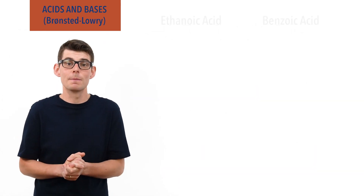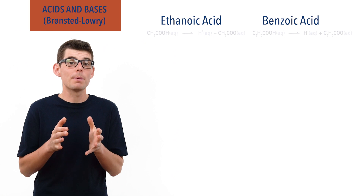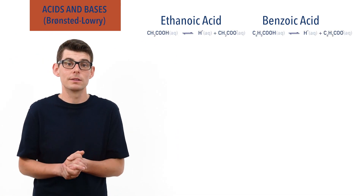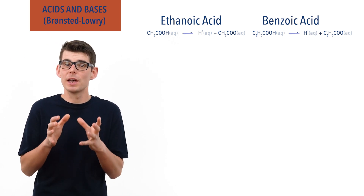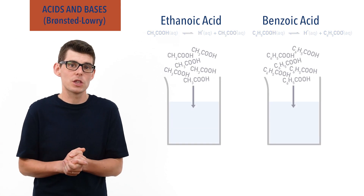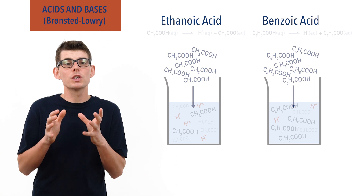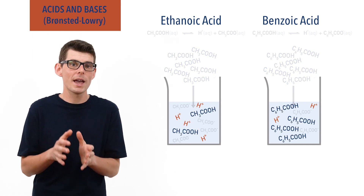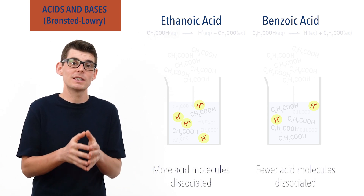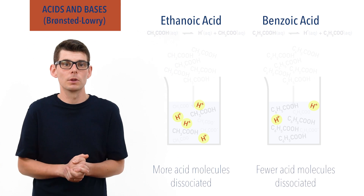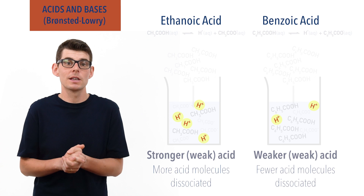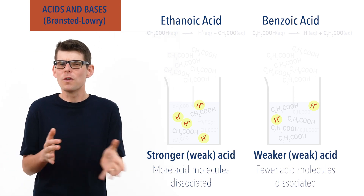For example, ethanoic acid and benzoic acid both only partially dissociate when added to water, making them both weak acids. Ethanoic acid dissociates more than benzoic acid, however, meaning if the same number of moles of each were added to the same volume of water, the solution of ethanoic acid would end up with more H+ ions, as more of the ethanoic acid molecules would have dissociated compared to benzoic acid molecules. This means that ethanoic acid is described as a stronger acid than benzoic acid, although it is still a weak acid.